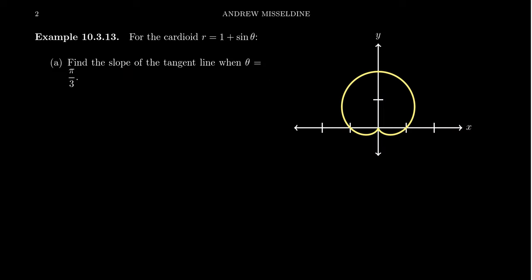Let's do a little bit of analysis of a cardioid. Take the function r equals 1 plus sine of theta, and let's look at some tangent lines for this curve. For example, let's find the tangent line when theta equals pi thirds. Pi thirds is about this angle right here on the graph, and the tangent line we can visualize would be something like this. We need to find the slope of this line.